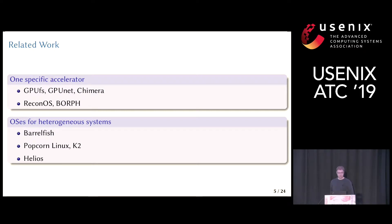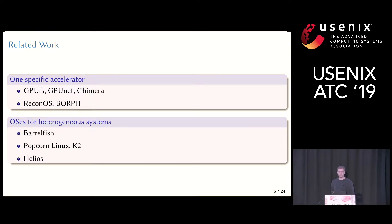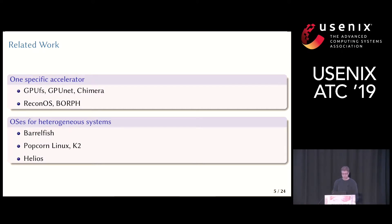In terms of related work, other works try to achieve similar goals. For one specific accelerator type, there is GPU-FS and GPU-Net for GPUs to access OS services, and ReconOS and both for FPGAs. There is also work on context switching on GPUs, for example by Chimera. There are also entire operating systems for heterogeneous systems like Barrelfish, Popcorn Linux, K2, and Helios. The main difference is that these works do not consider hardware changes and therefore have to stop early — so let's see what we can do if we allow hardware changes.